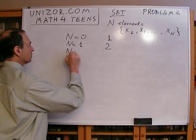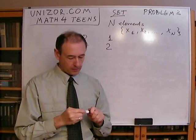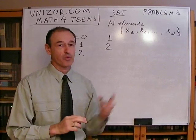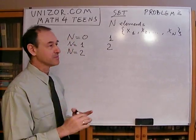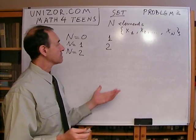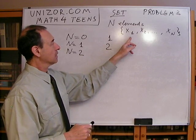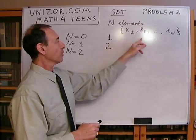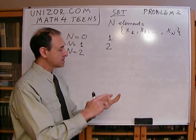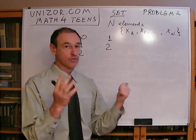n equals two: we have x1 and x2. What are the subsets? Empty, x1, x2, and then both together — x1 and x2, which is the complete set. So how many? Zero elements, only x1, only x2, and x1 plus x2. Four subsets.